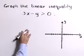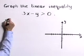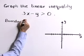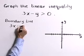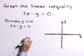Let's start by graphing the boundary line. 3x minus y is equal to zero.